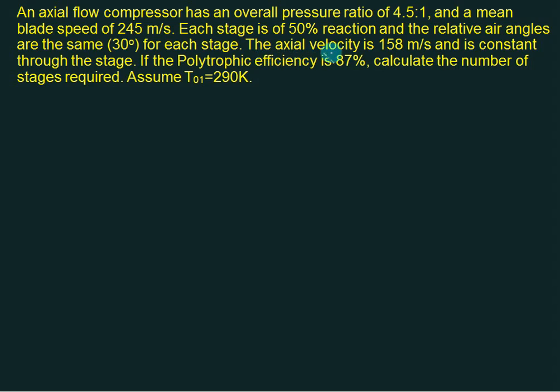Axial flow velocity is 158, that is Vf and is constant. Polytropic efficiency is a new term here, is 87 percent, and calculate the number of stages required. Assume initial stagnation temperature equal to 290K.